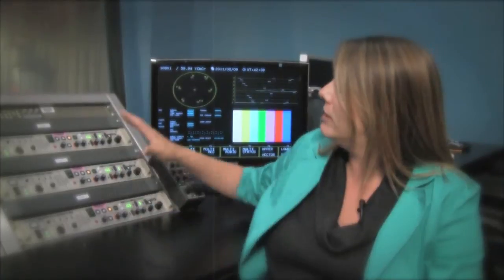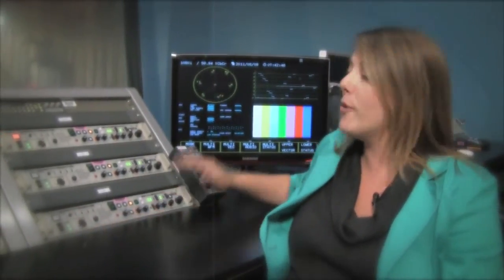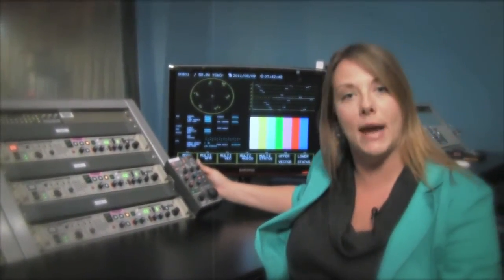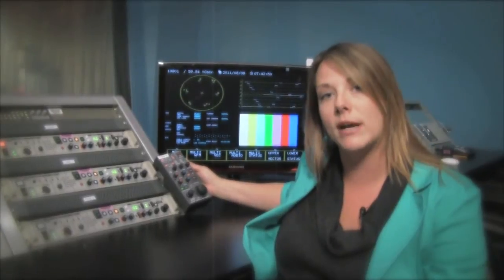Now to start things off with our configuration here, you can see that we have three CCUs that are all the same type. These are the Sony CCUs. Our fourth CCU here is for our jib camera, which is a different type of camera down in the studio and it has a different type of camera control unit.